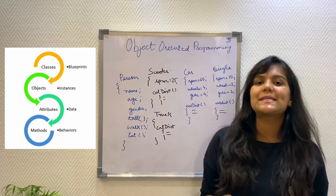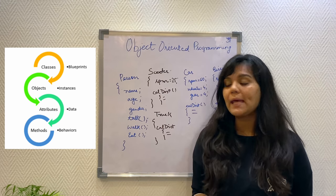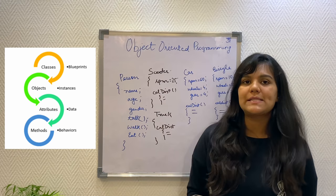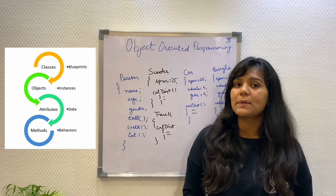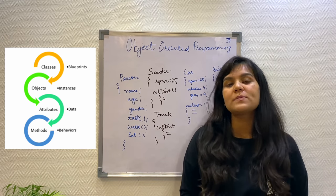An object is any real-world entity that you see around yourself. In this video, you can see me, this board, this pen and this plant. All of these are objects because they exhibit certain properties and perform certain tasks.